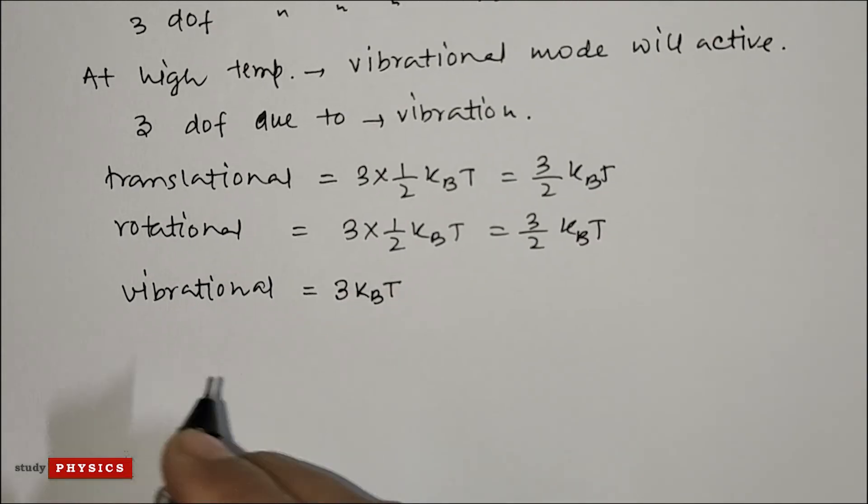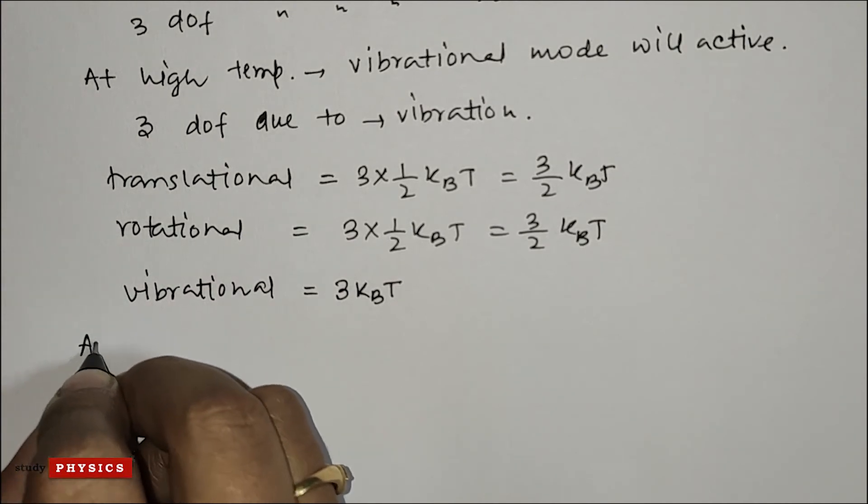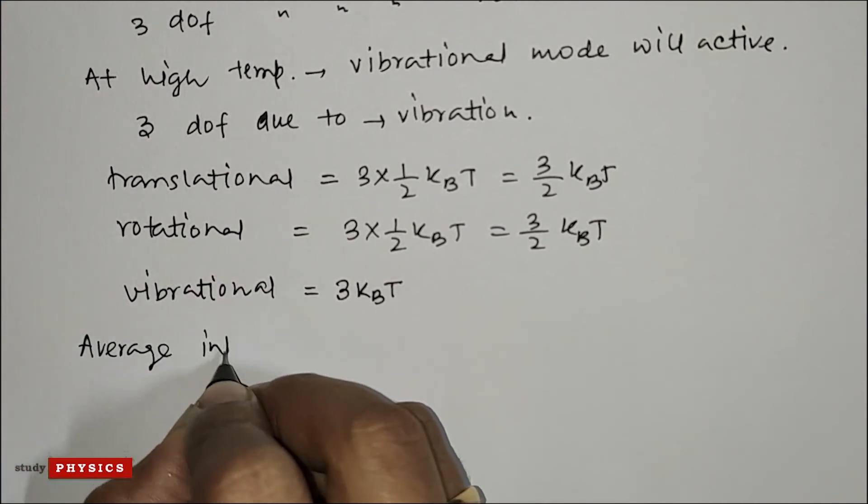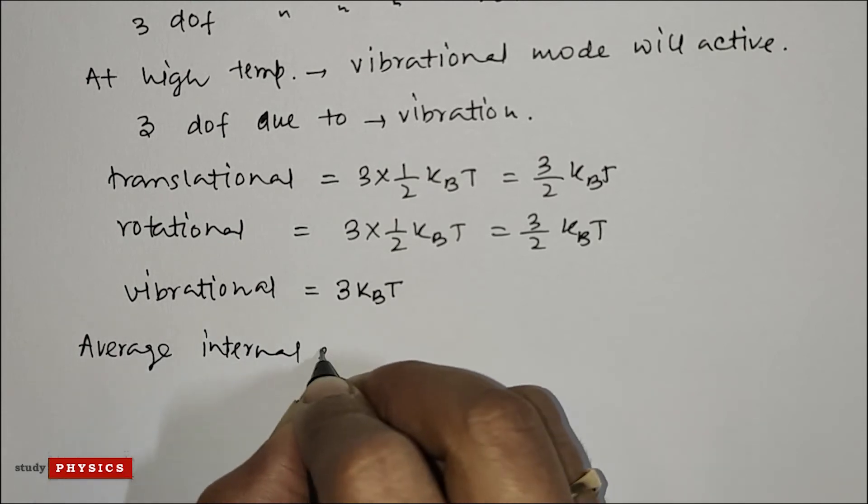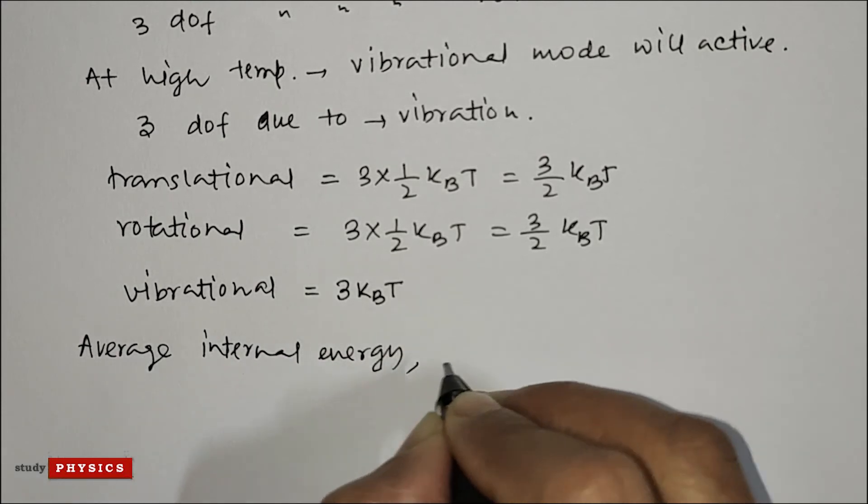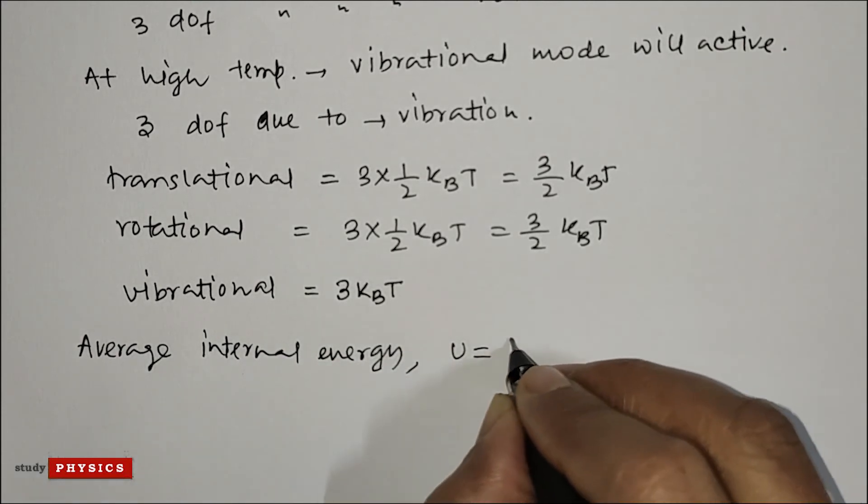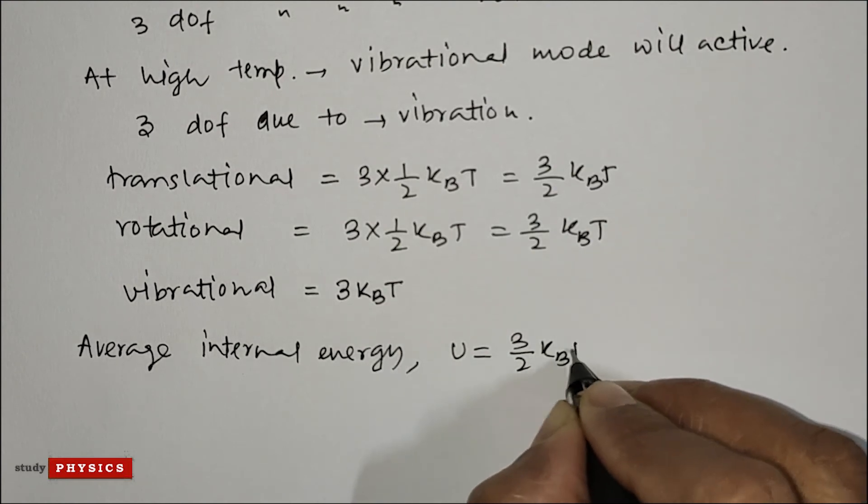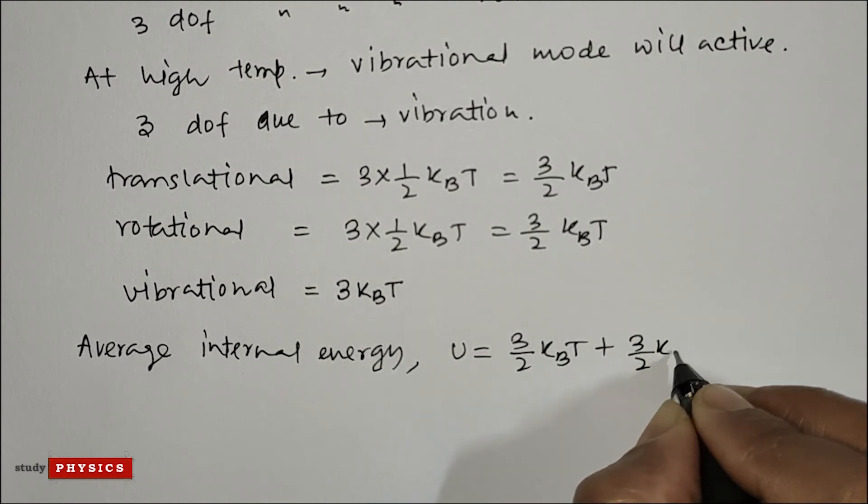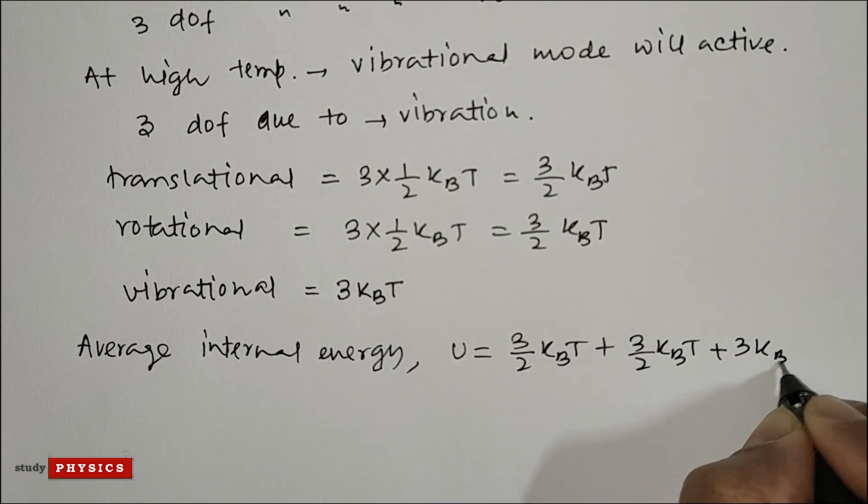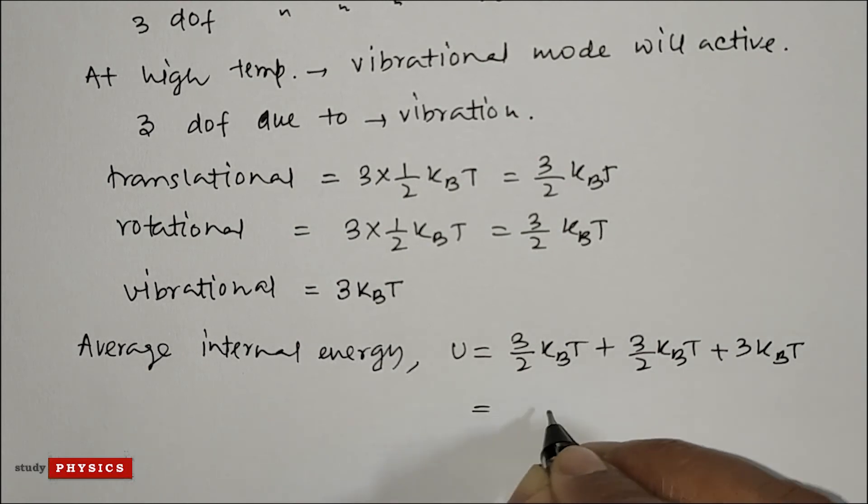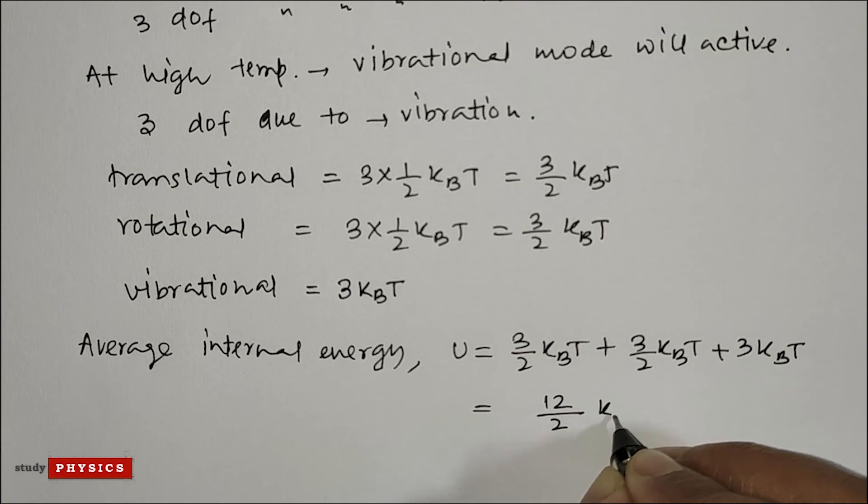So the average internal energy U equals 3/2 k_B T plus 3/2 k_B T plus 3/2 k_B T plus 3 k_B T, which is 12/2 k_B T, which equals 6 k_B T.